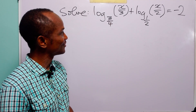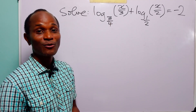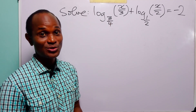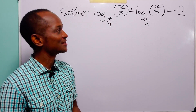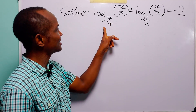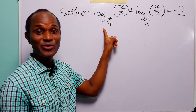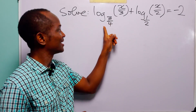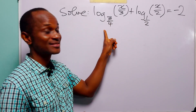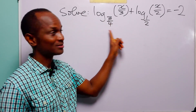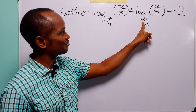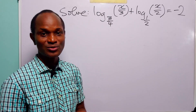When you look at this equation, one of the first things you will immediately notice is that these two log terms are in different bases. Here we have base 3 over 4, and here we have base 1 over 2.